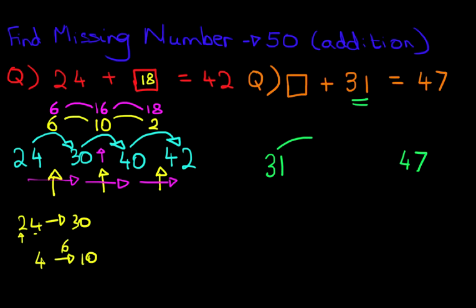So, 31, what we do first is we go from 31 to 40. And then from 40, we're going to go to 47. Now, this one only has two steps.